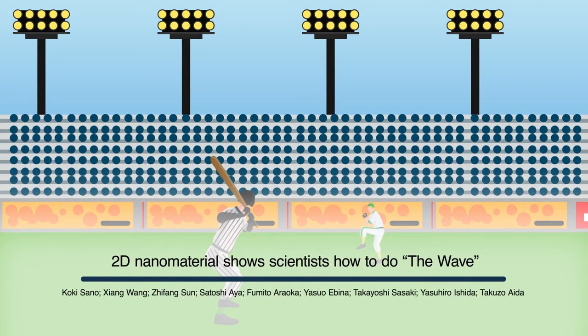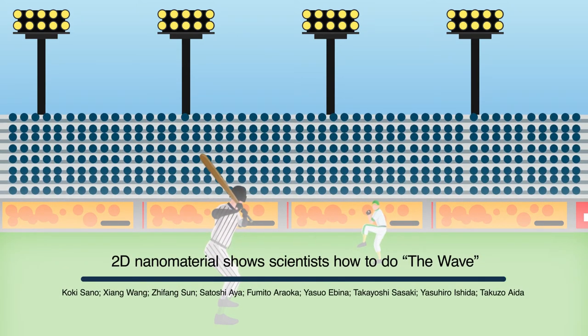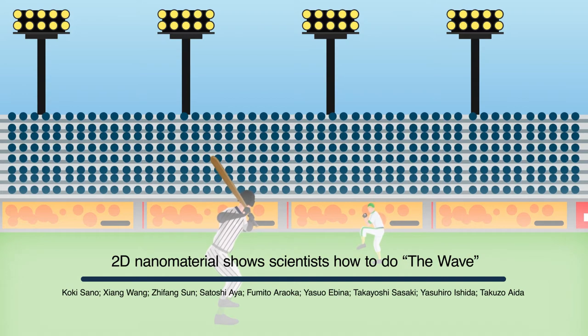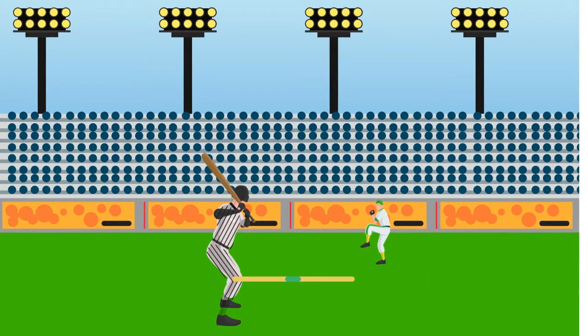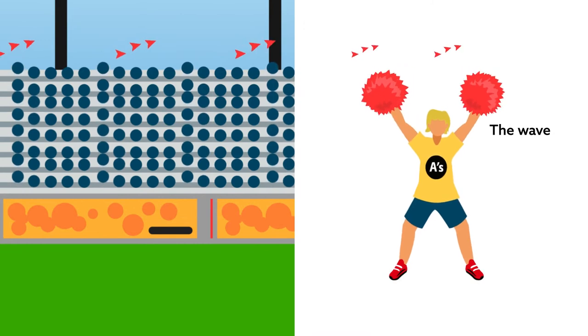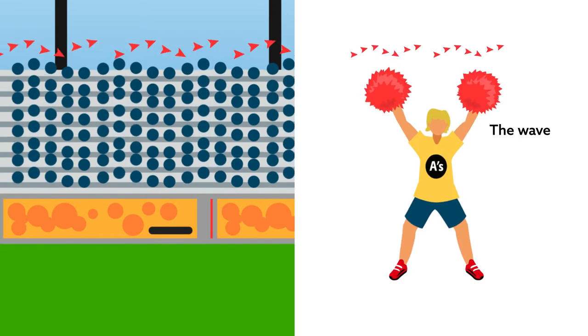In 1981, spectators at the playoff game between the Oakland Athletics and New York Yankees did something no other crowd had ever done before. At the direction of Crazy George, the professional cheerleader, they did the wave.